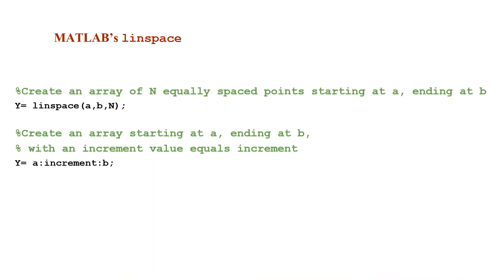This slide is a reminder of how to use linspace. The linspace function creates an array of a specific number of equally spaced points between A and B. Remember to differentiate between linspace and the colon notation: with the colon notation you know the increment value, whereas with linspace you know how many points are needed. We will need linspace in this exercise to define the ADSR envelope function.